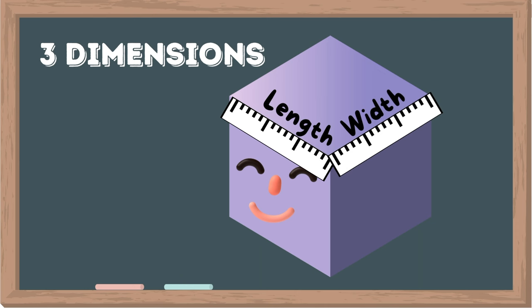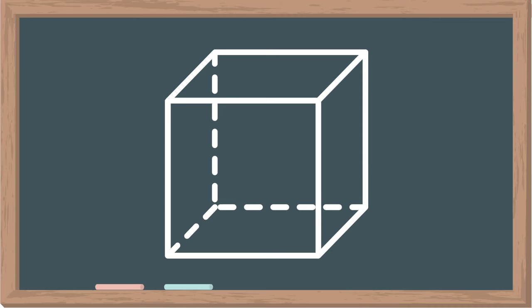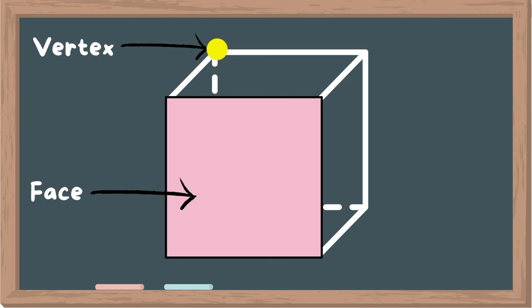And to classify a 3D shape, we look at its vertices, faces, and edges. Let's take a look at this example. A face is basically a flat surface. A vertex is a corner — it's where the three faces of a 3D shape meet. An edge is the line where the two faces meet.